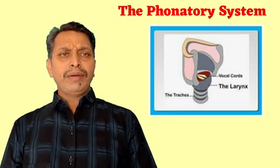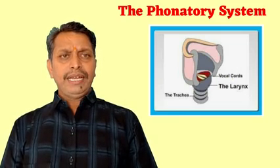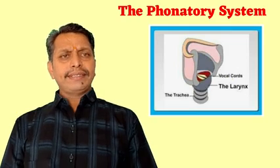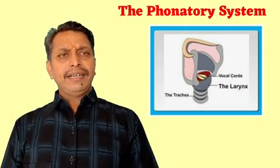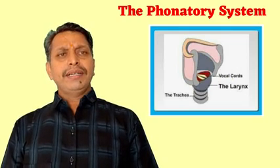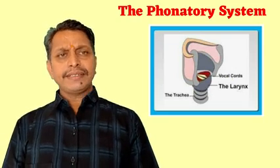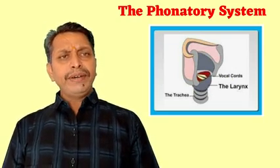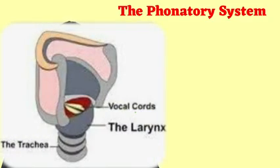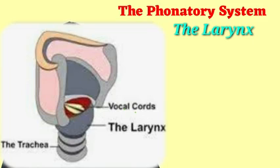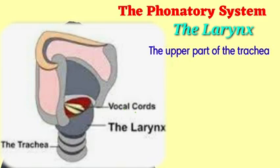All languages are pronounced with the help of the pulmonic egressive airstream mechanism. In this context, we are going to discuss the phonatory system. As far as the phonatory system is concerned, the first organ of speech included in it is the larynx. The larynx is situated in the upper part of the trachea — that structure is called the larynx. The larynx is formed of cartilage and muscles.